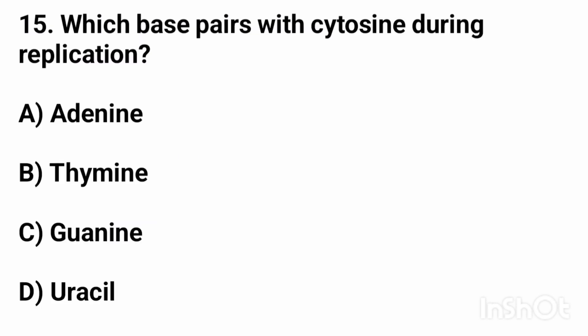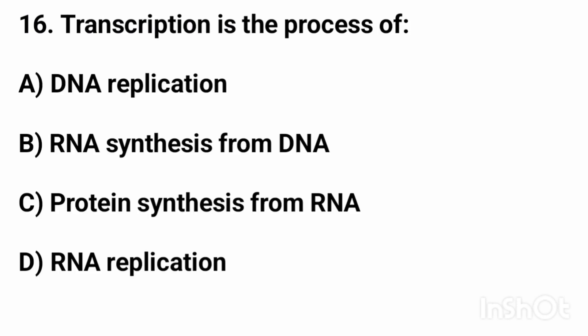Question number fourteen: the replication fork is? The right answer is option C, a Y-shaped region. Question number fifteen: which base pairs with cytosine during replication? The right answer is option C, guanine.